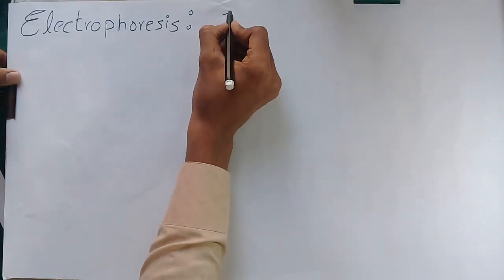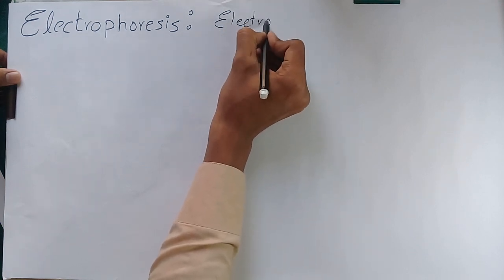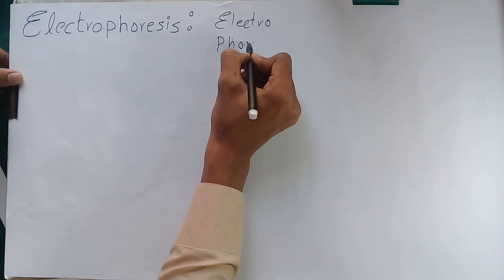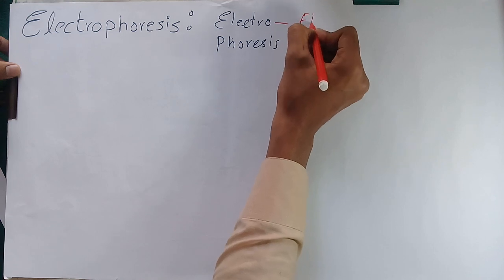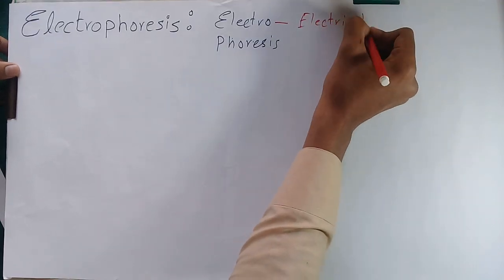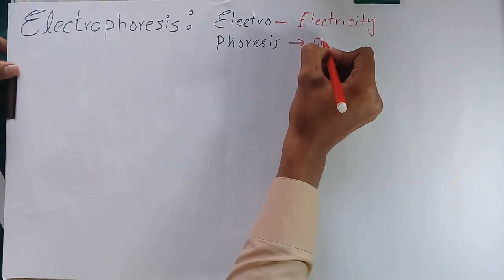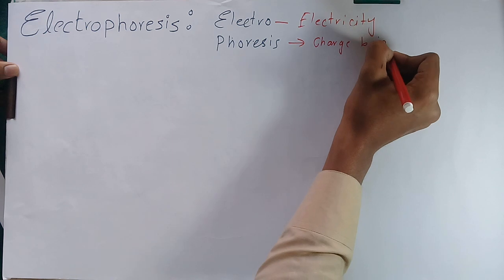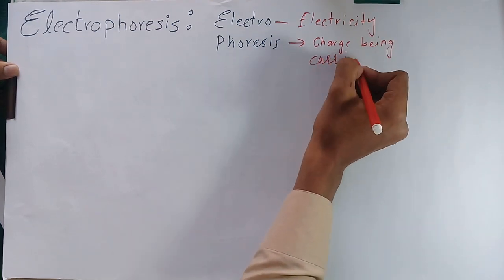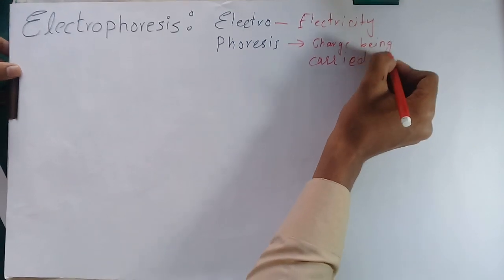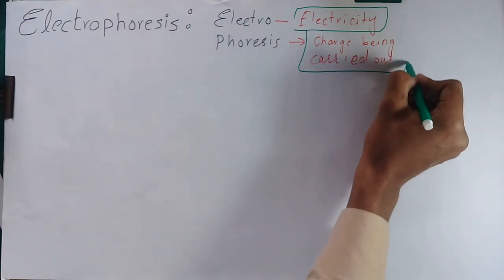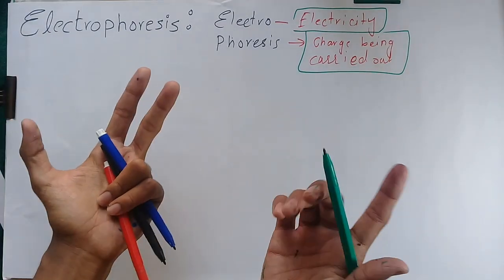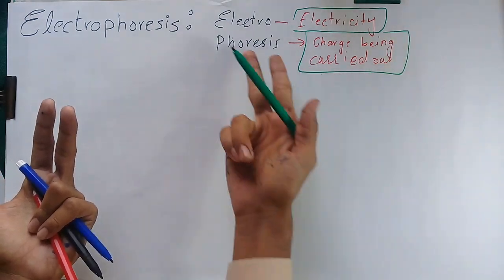What is electrophoresis? Electrophoresis is a combination of two words: one is called Electro and the other is called Phoresis. Electro means something concerned with electricity, and Phoresis means the charge being carried out. So these are the two basic words which together form electrophoresis — electricity and the charge being carried out.